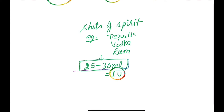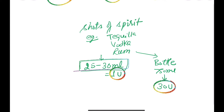What about a bottle of spirit? A bottle of spirit, like the bottle of wine, is 750 ml. But here it will be 30 units. So shots of spirit: 25 to 30 ml in a standard glass is 1 unit, and an entire bottle of 750 ml is 30 units.